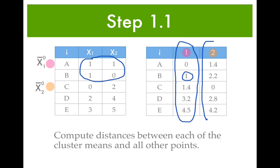And this column contains the distances between each observation and the mean of cluster 2. That's the first step — you have to calculate all of these distances.